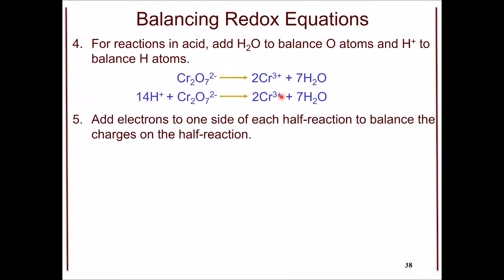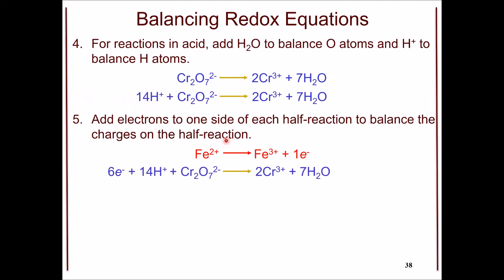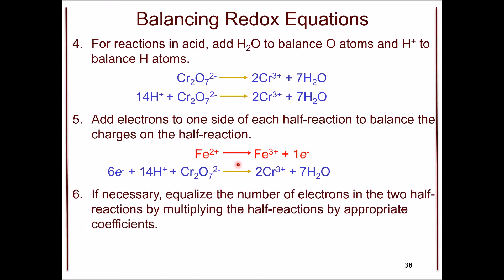We add the appropriate number of electrons to one side of each half reaction to balance the charge. For the oxidation half reaction, we need one electron to balance the charge. For the reduction half reaction, we add six electrons to the left-hand side. Since the number of electrons is not the same in both half reactions, we multiply the oxidation half reaction by six so that both have six electrons.